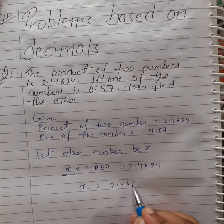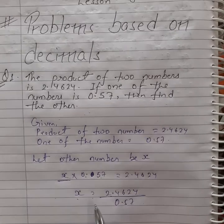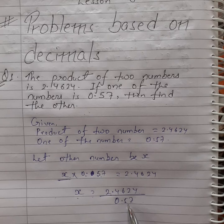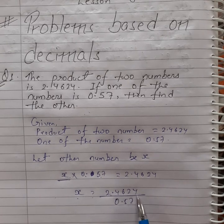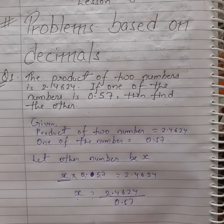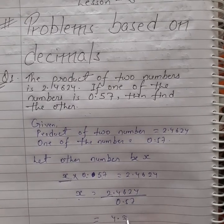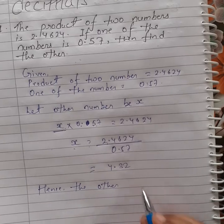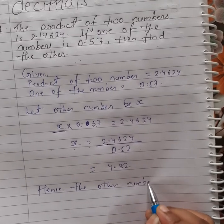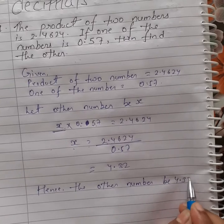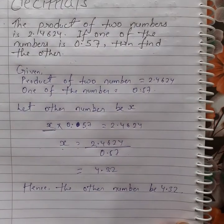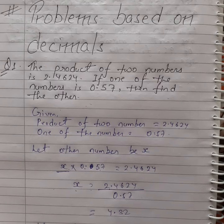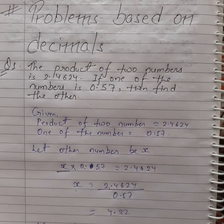So x is equal to 2.4624 divided by 0.57. When we divide 2.4624 by 0.57 we get the result 4.32. Hence the other number is 4.32. We divided the product by the first number and we get the other number.